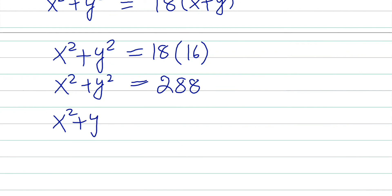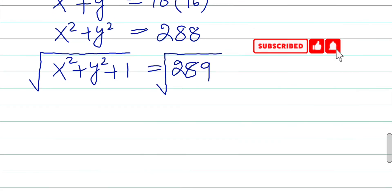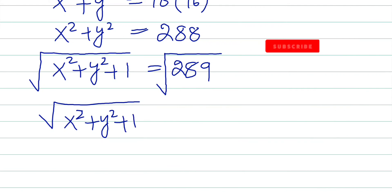Now we wanted x² plus y² plus 1, and square root of this one. The square root of x² plus y² plus 1 equals the square root of 289, which equals 17, and that is our answer.